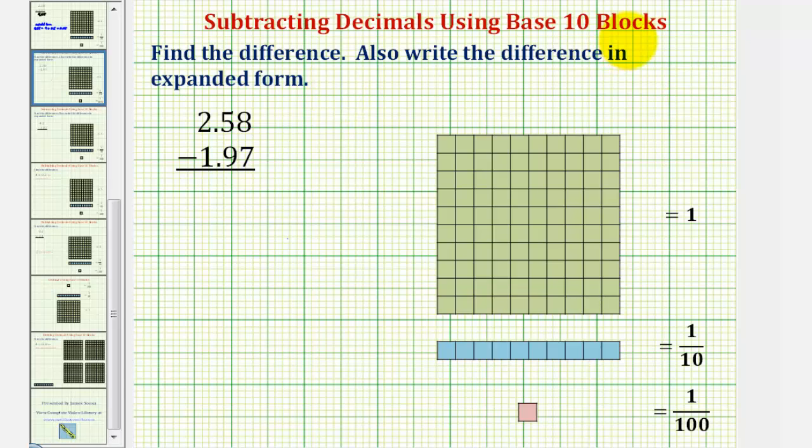We want to find the difference using base ten blocks, and also write the difference in expanded form. So here we have two and fifty-eight hundredths minus one and ninety-seven hundredths.